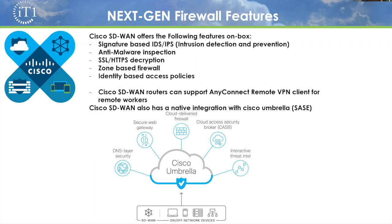If you need to take a step up from there, there's also a native integration with Cisco Umbrella, which is similar to Zscaler or other SASE providers like Prisma Access. You have the option to automate a tunnel to Umbrella to have your traffic go through further inspection — things like CASB or a secure web gateway. So it definitely has all the firewall features that you could need and can fit most use cases.